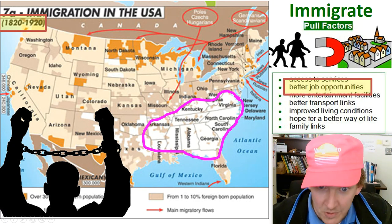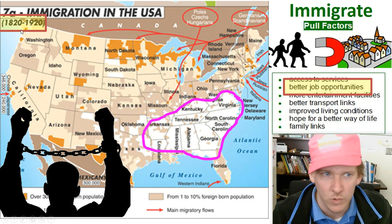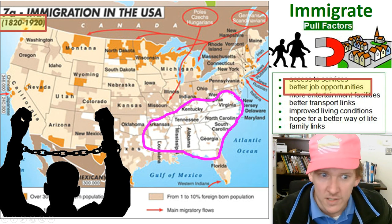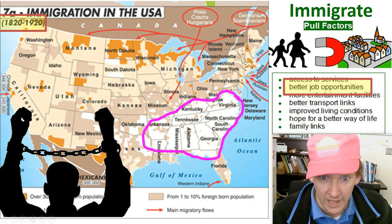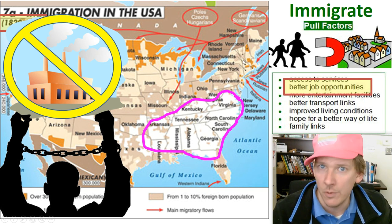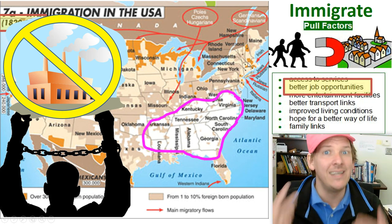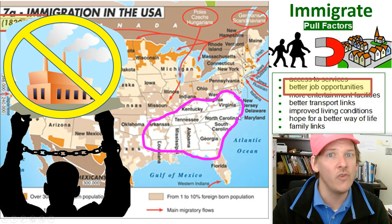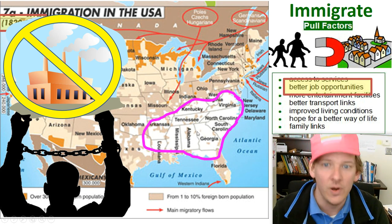Even after slavery ended in 1865, up to 1920 people still did not move into the South. The reason was that the South's economy was based on slavery, farming, and agriculture — they did not have factories. The factories were in other parts of the country. If you moved somewhere, that place needed to have factories and be industrialized with manufacturing jobs. Those did not exist in the South, so even after slavery ended, there weren't jobs or factories to move into.